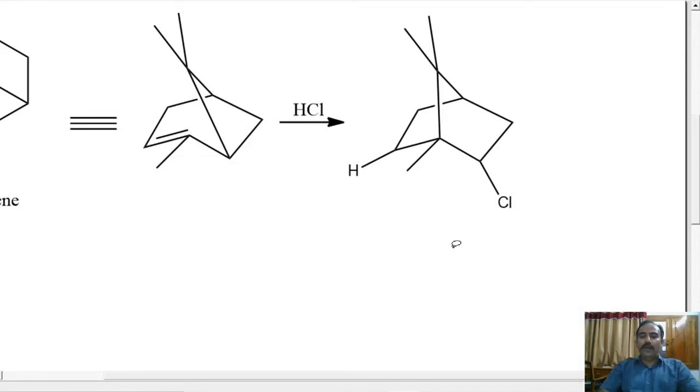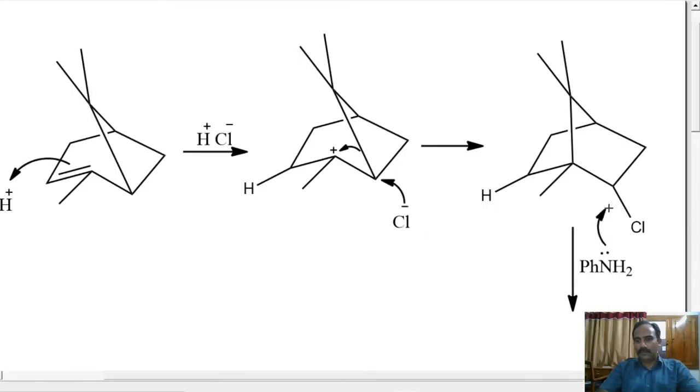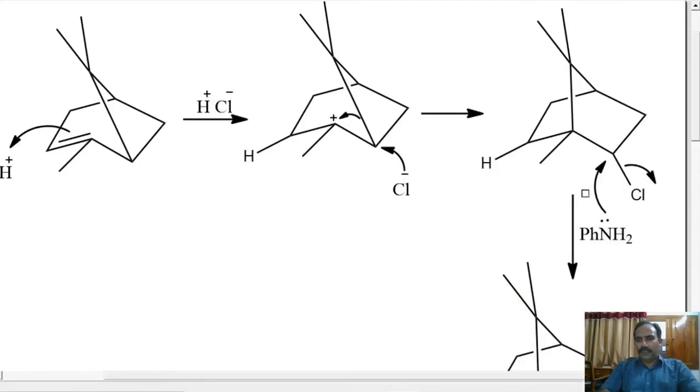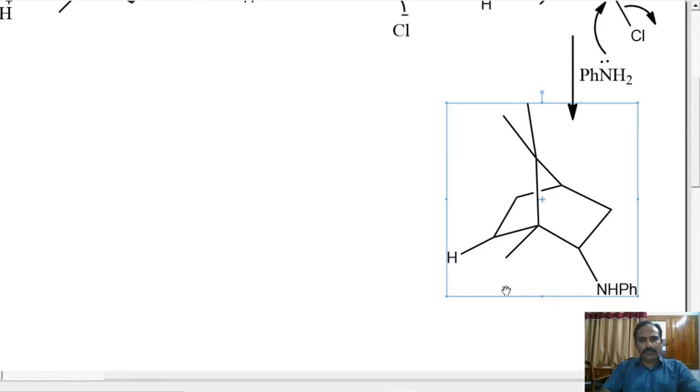Bornyl chloride on reaction with aniline produces bornyl aniline. This could simply be an SN2 reaction. Simply, Cl- leaves. As this part is crowded, the attack actually comes from the other part, and the product is actually isobornyl aniline.